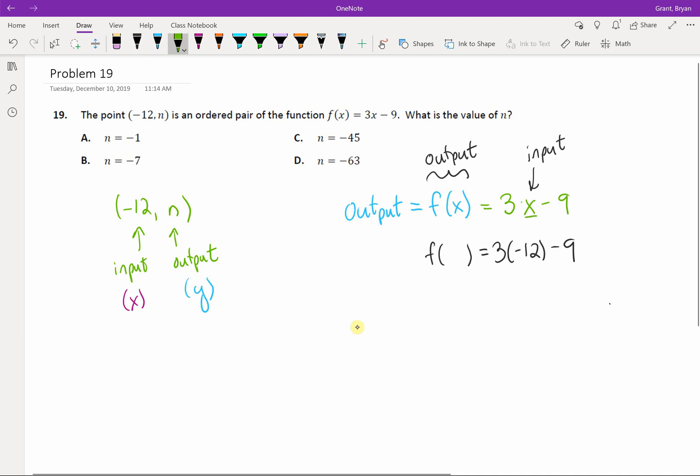So, if I'm replacing x with negative 12, then this also gets replaced. My input is on the right side. We're going to do some math with that. That's negative 36 minus 9. And I'm trying to find what is the output when I substitute a negative 12.